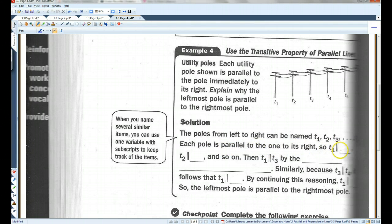So, T1 is parallel to—I'm going to make a cursive T—T2. T2 is parallel to T3, and so on. Then, T1 is parallel to T3 by the transitive property of parallel lines.